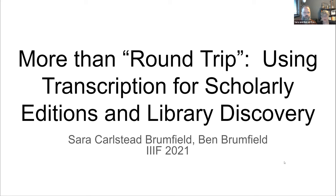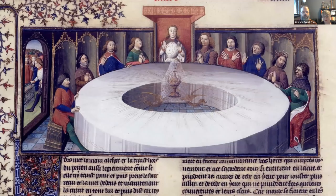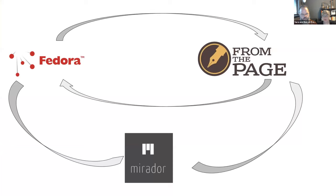We're talking about more than round trip — doing better integrations. In the IIIF world, we talk a lot about interoperability. For crowdsourcing platforms, that usually means making sure that images and metadata from digital library systems are loaded onto the crowdsourcing platform for people to contribute to, and that crowd contributions get back into the digital library system. That last bit is trickier than you might think. We sometimes describe this as round trip integration, like the connection between the Fedora repository at University College Dublin and our crowdsourcing platform From the Page. But what if there are more than two platforms to integrate?